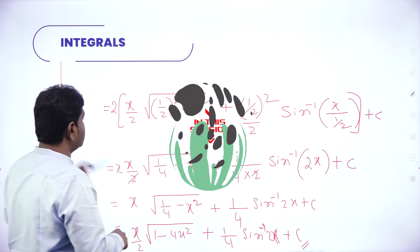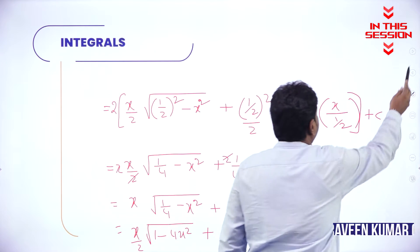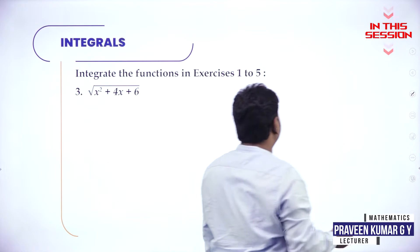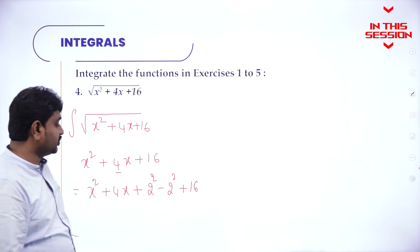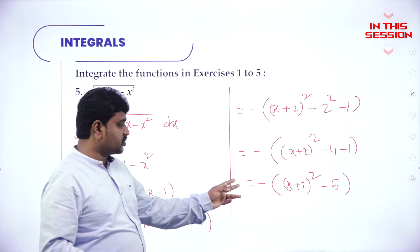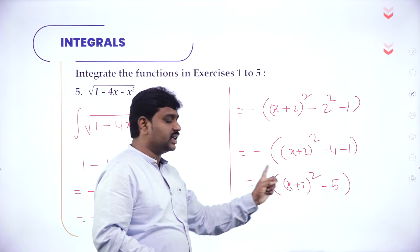Always write the problem in standard form. What is the standard form? Any one of the specific integrals nearest. Add and subtract half the coefficient of x, the whole square. Always the coefficient of x square should be negative — now I will take it inside.